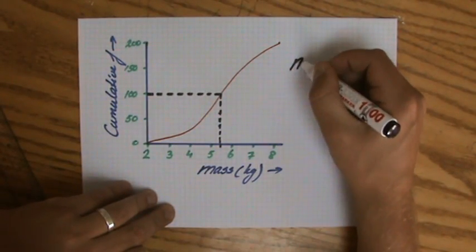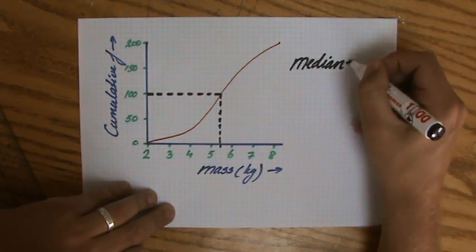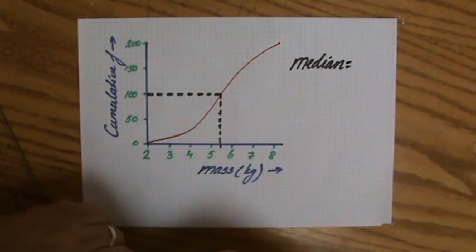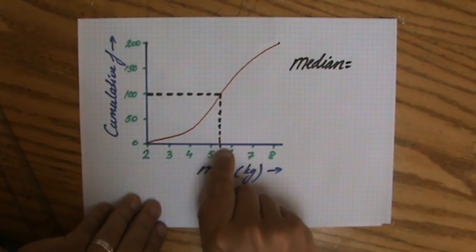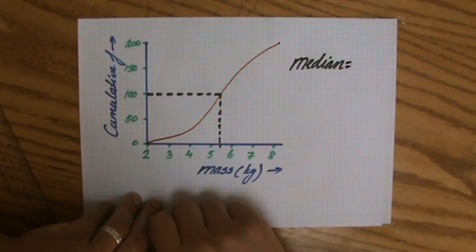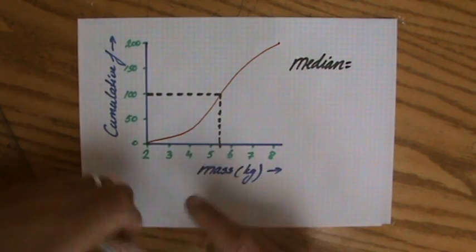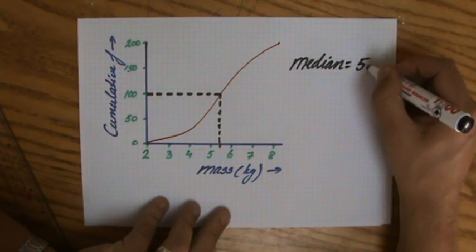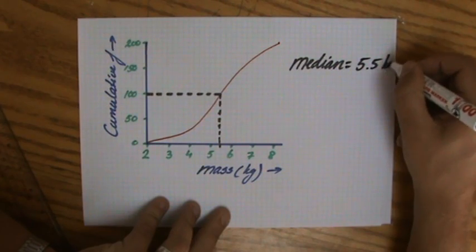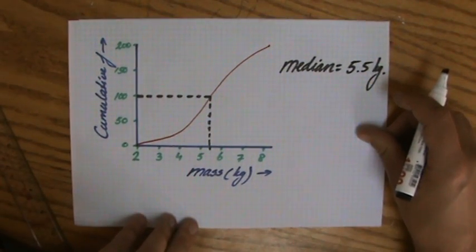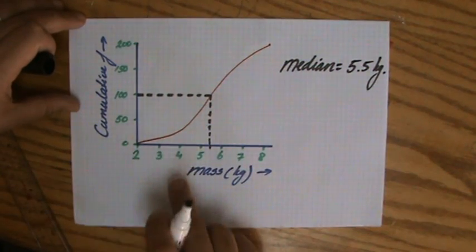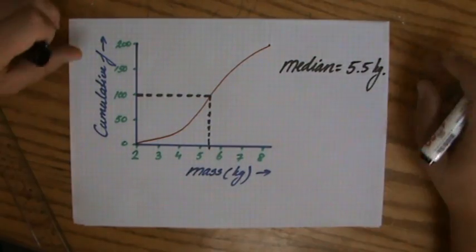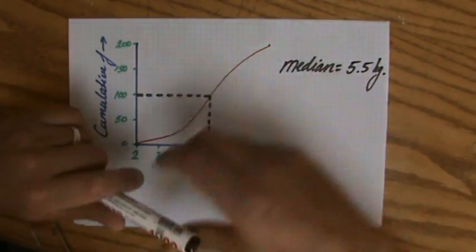There we go, and it is there. So what is the median? I'm going to write that here. The median equals... Now I've got to take some care there because the scale - 1, 2, 3, 4 blocks is 1, so each block is a quarter. So two blocks is a half, so 5.5 or 5 and a half kilograms. Make sure you always take care when you look at the scale.